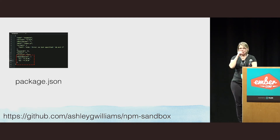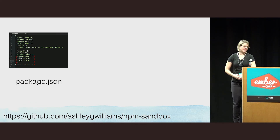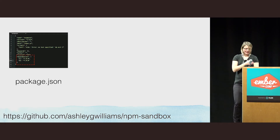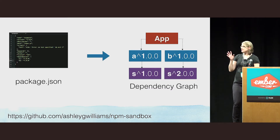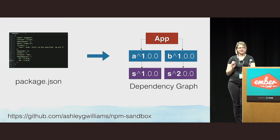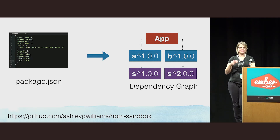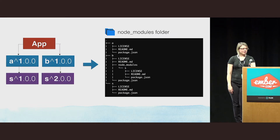Let's start with an example. I'm using Ashley Williams' NPM sandbox example — she's the community manager of NPM, definitely check out that GitHub repo. We have our manifest file, our package.json, describing a simple app with two direct dependencies, A and B. These dependencies each have a child dependency on S, but in different versions — A has version 1 and B has version 2.